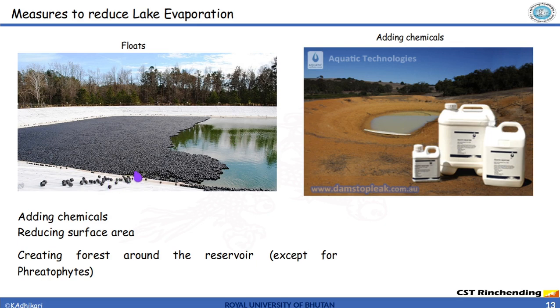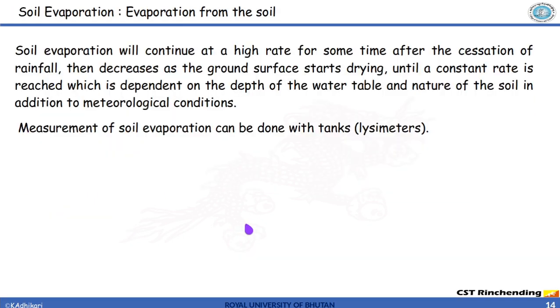There are other techniques such as reducing the surface area, creating forest around the reservoir and there are some plants which tend to absorb more water. When we say creating forest we should avoid planting such trees which can absorb more water and there can be more losses in terms of evapotranspiration. That has to be considered.